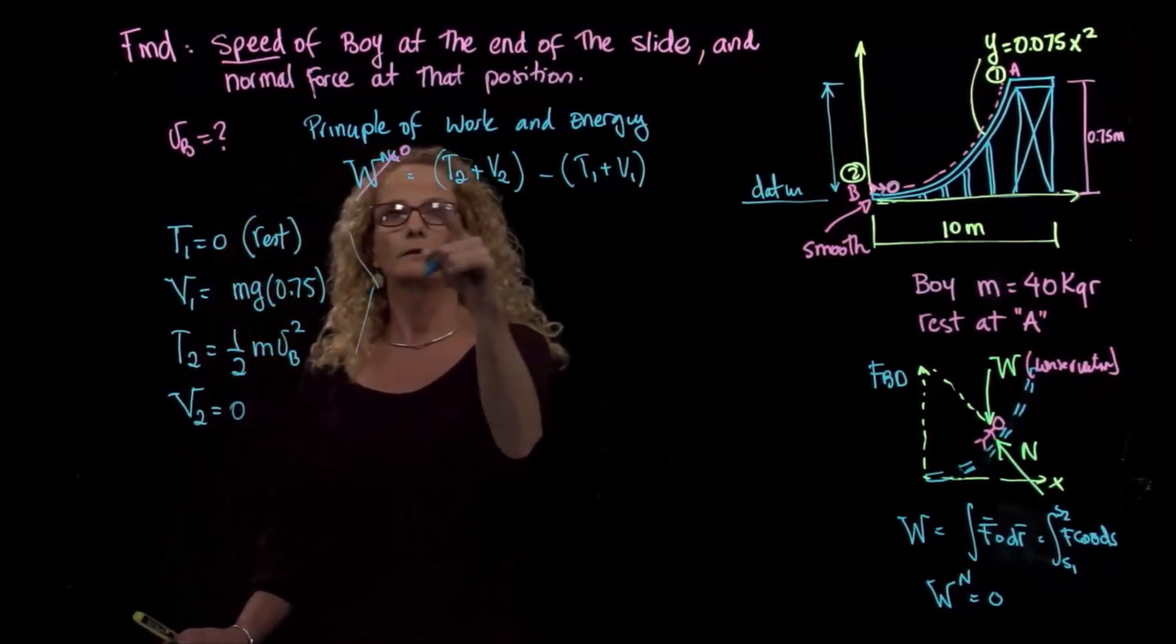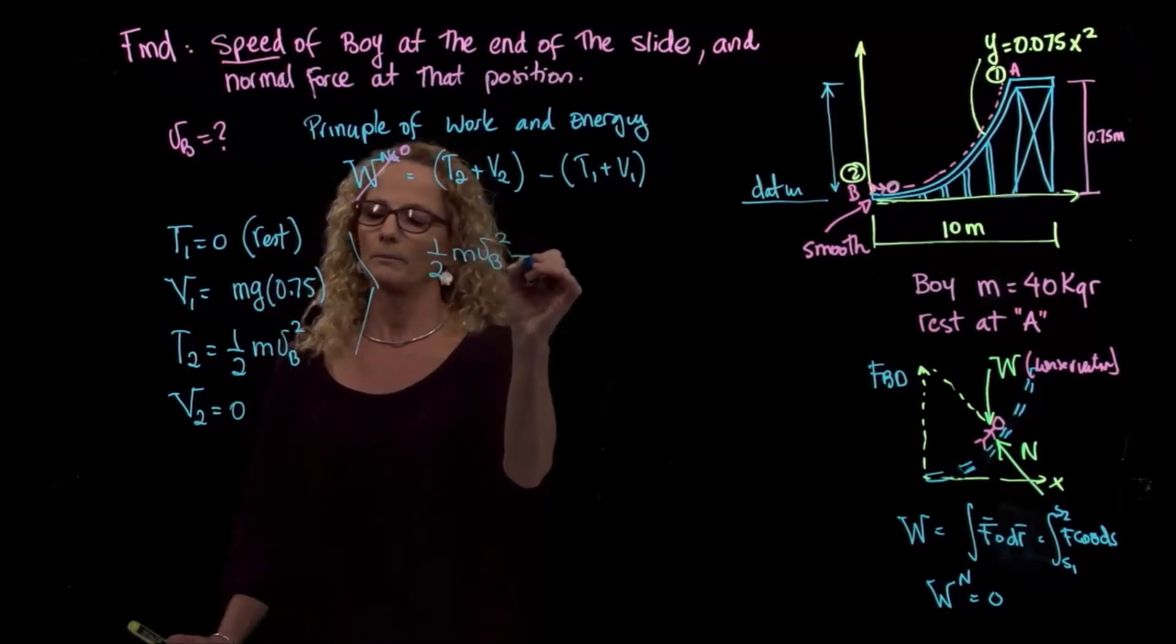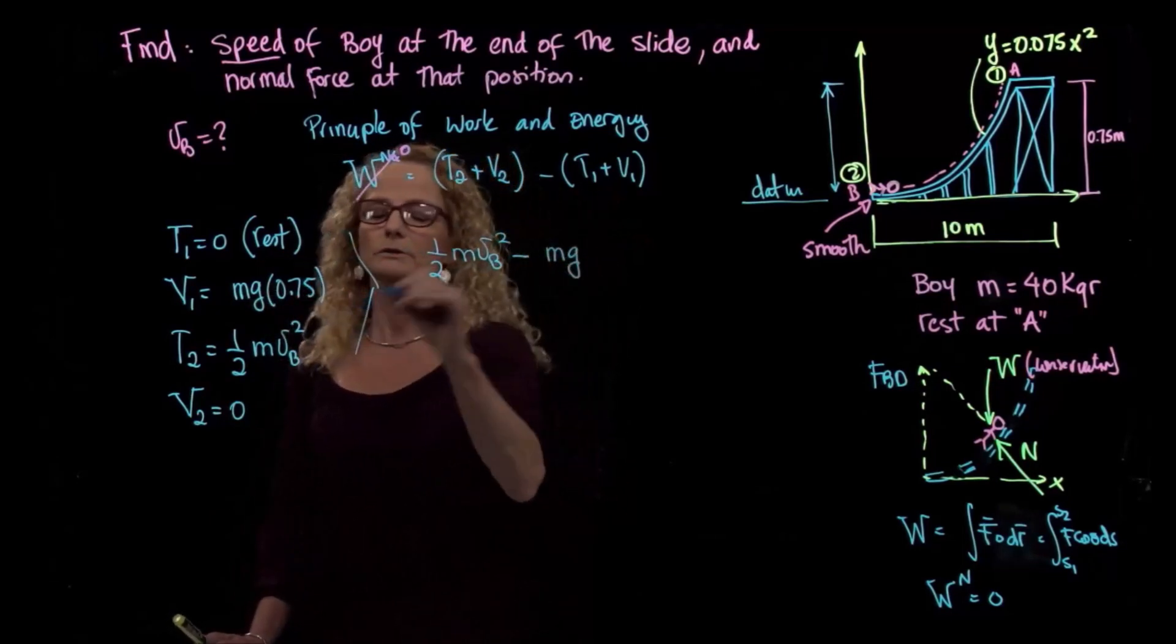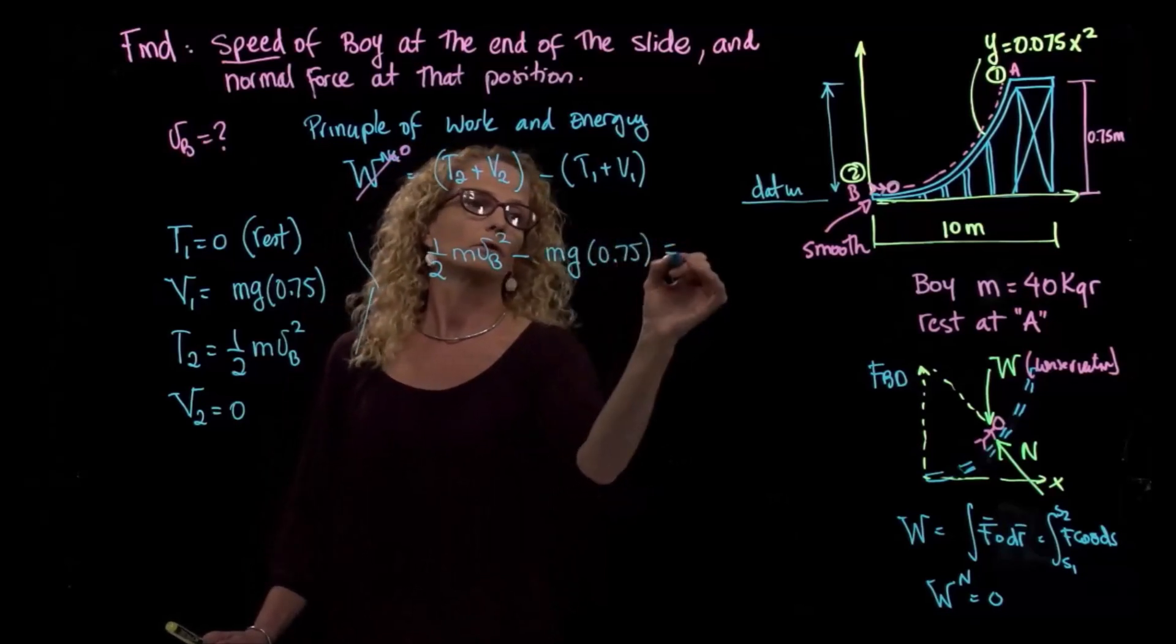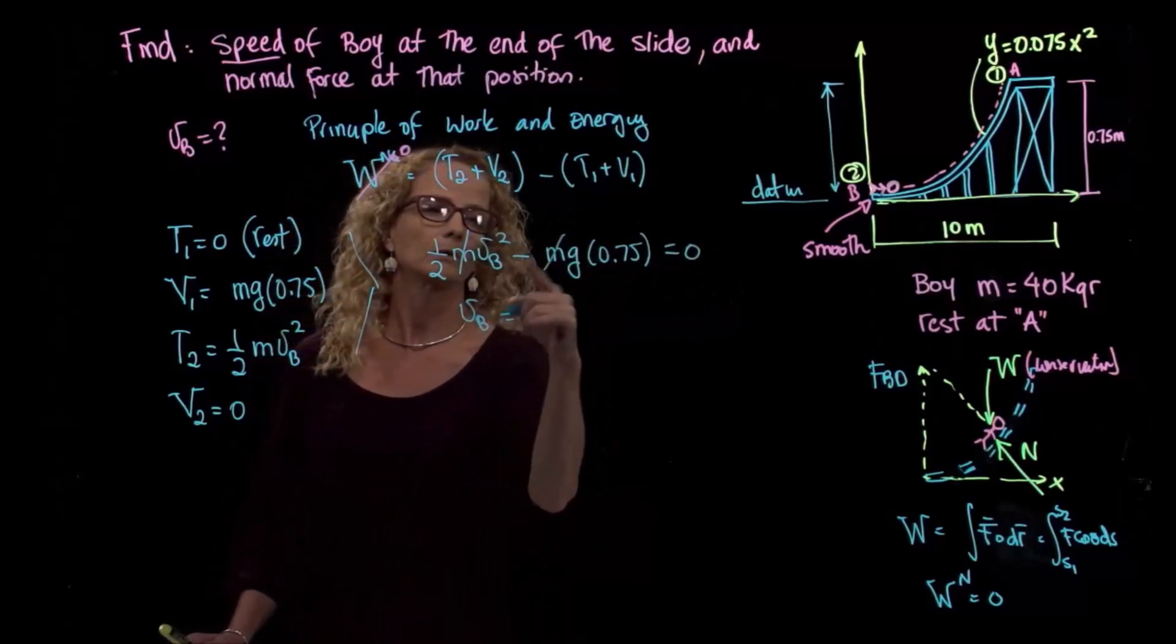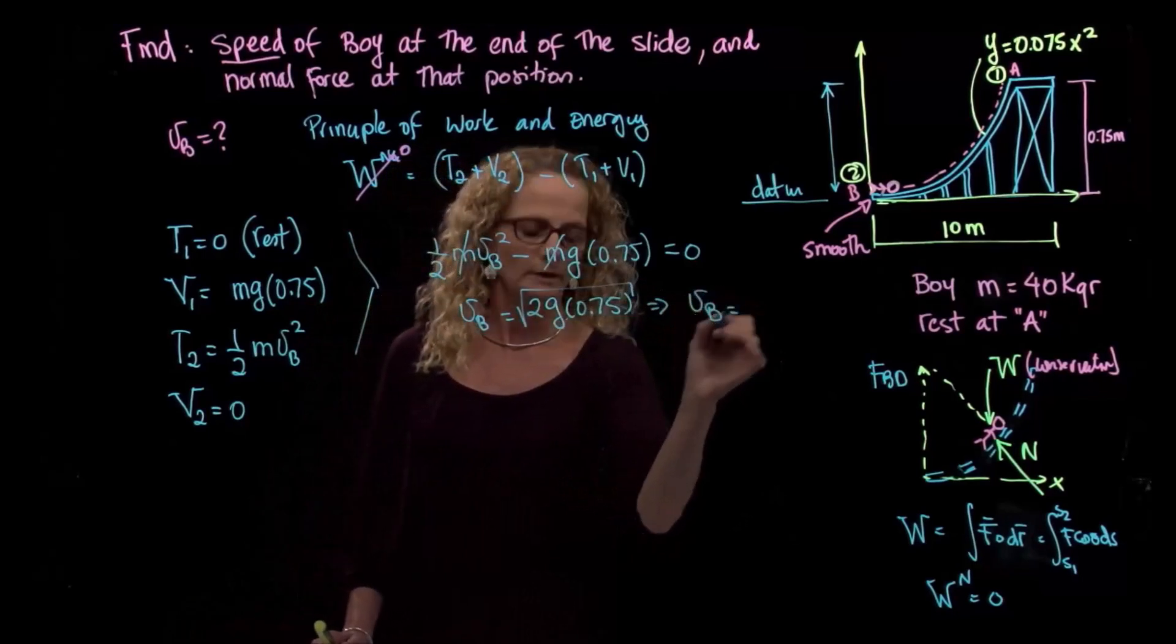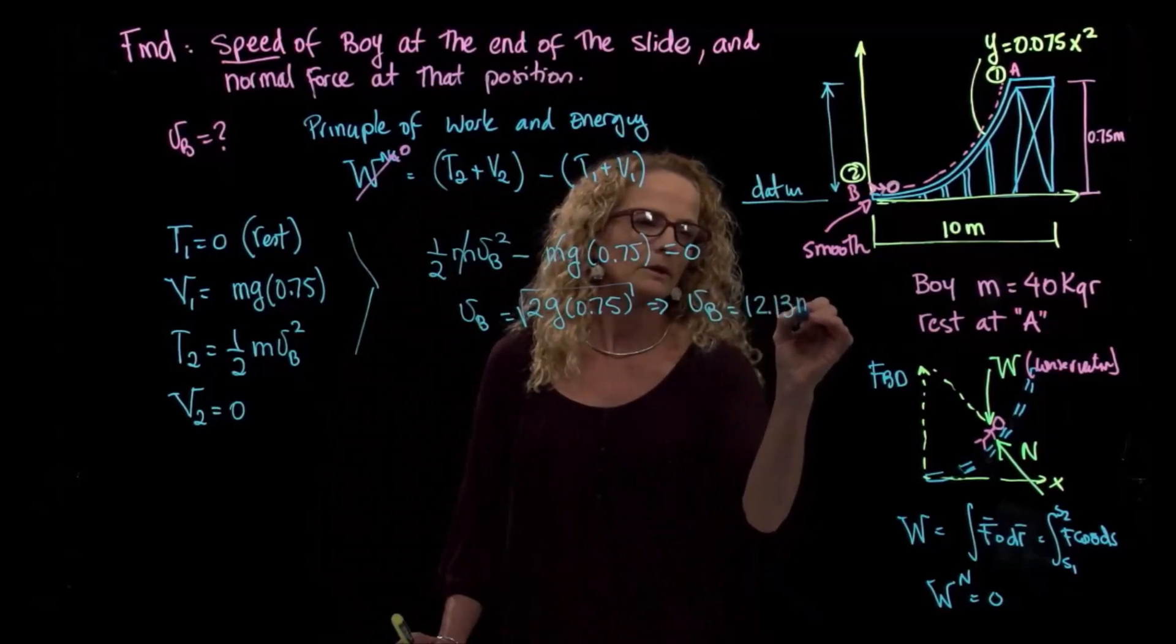Therefore, from here, I can say that one-half mass velocity B squared plus zero is equal to zero minus my potential energy. And this is equals to zero, right? So as you see, the mass goes, and I can say that the velocity will be equals to the square root of g times 0.75 times 2. So the velocity was very easy to find, which is equals to 12.13 meters per second.